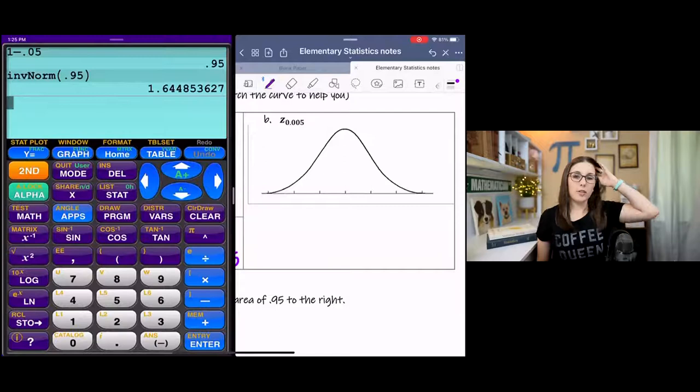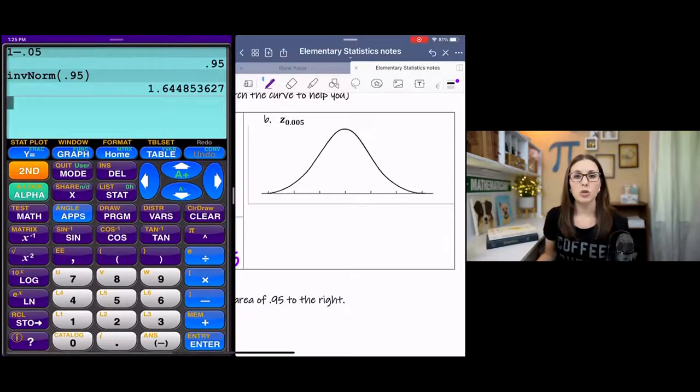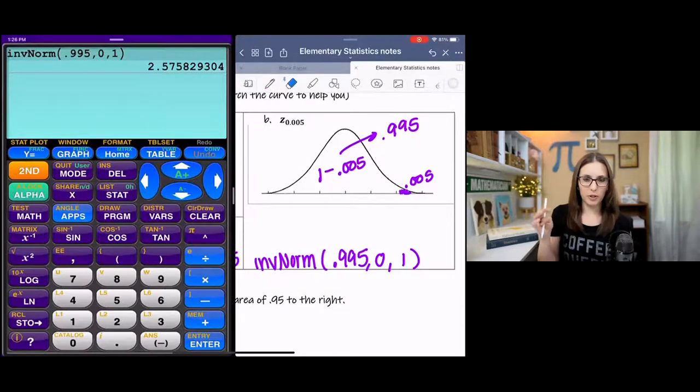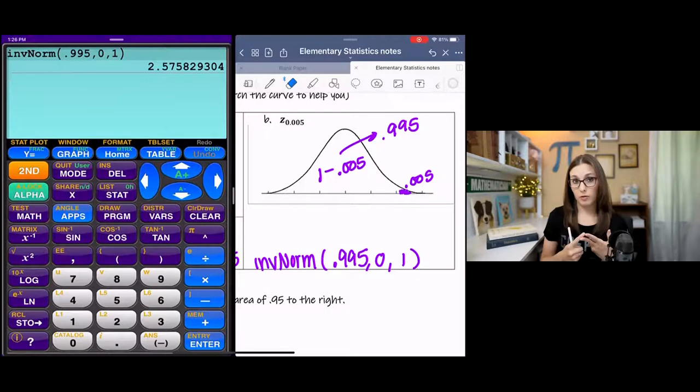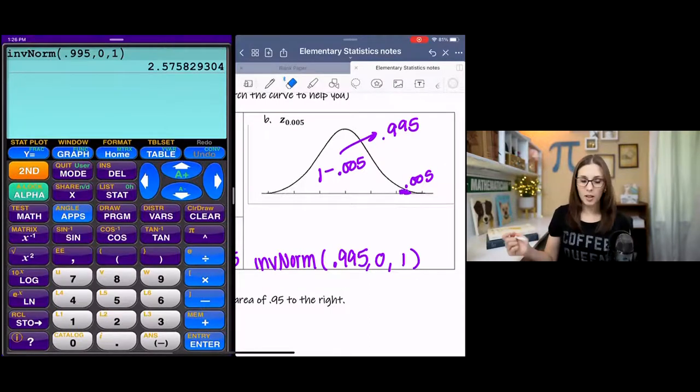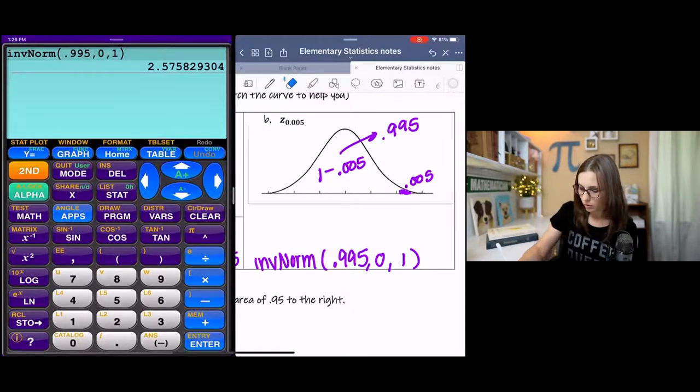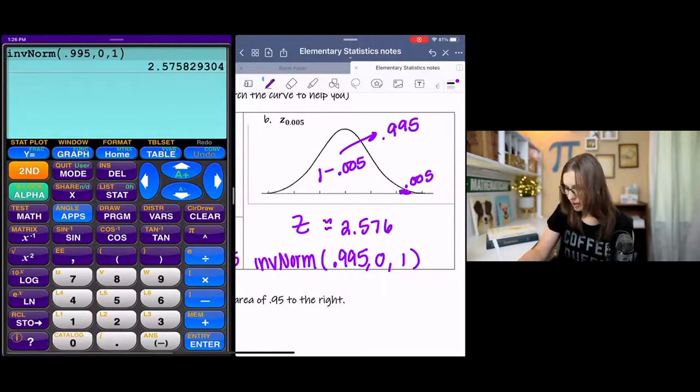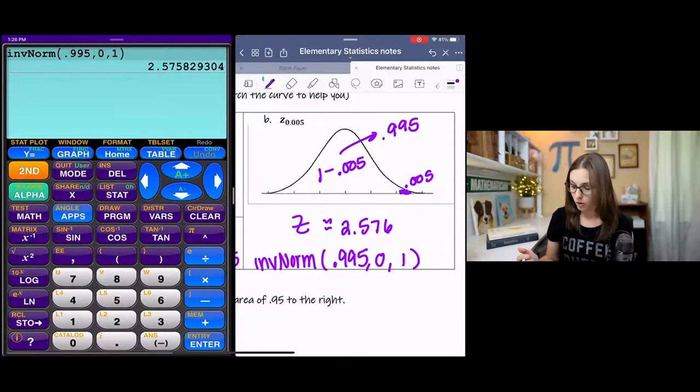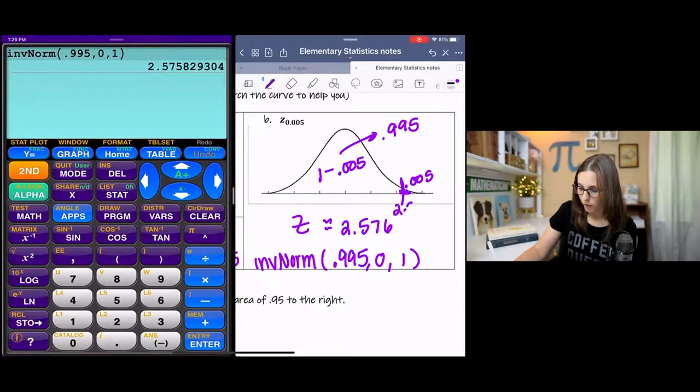For the next example, I want you to try this on your own first. You can use the z-table or your calculator. So I want you to pause it, try it, and come back and check your answer. Hopefully you didn't use the stuff that I had in my calculator before. The right tail is 0.005, which leaves 0.995 for the left area, which is what we want if we're going to use the z-table or inverse norm. So you can do second VARS, grab inverse norm, 0.995, 0, 1. And we end up with a z-score of about 2.576, if I were to round to three decimal places. And that's all it's asking for. So this z-score right here is 2.576.